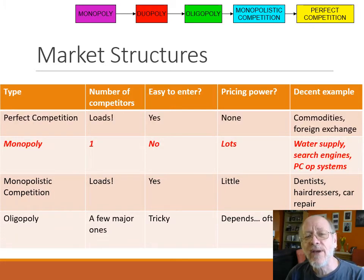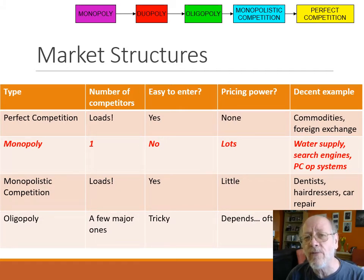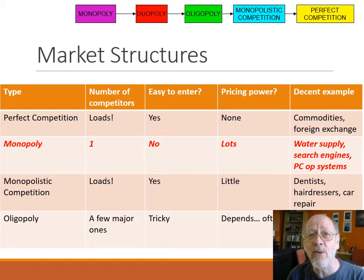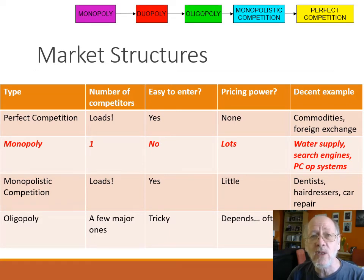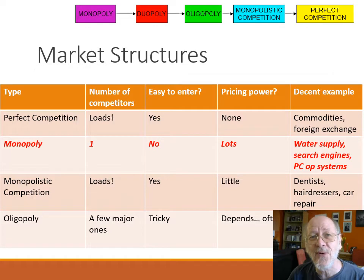At the other end of the spectrum is a market structure that also doesn't exist in a pure form in the real world, and that's monopoly. As the name implies — in a game of Monopoly your aim is to knock everybody else out of the market so there's only one player. In a monopoly, 'mono' means one, so there is literally one competitor, which implies it's going to be really difficult, if not impossible, for others to join that market.